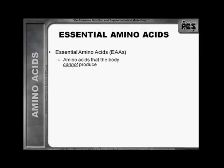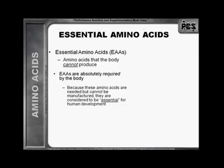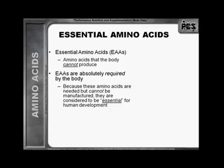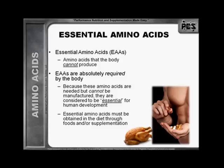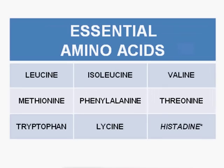The essential amino acids are those that the body cannot produce. They are absolutely required by the body. Because these amino acids are needed but cannot be manufactured, they are considered essential for human development. Essential amino acids must therefore be obtained in the diet through foods and/or supplementation.